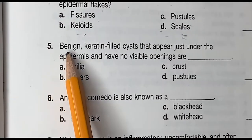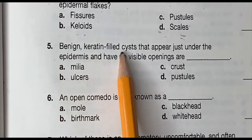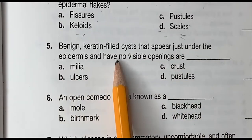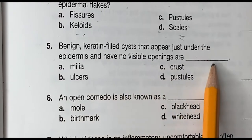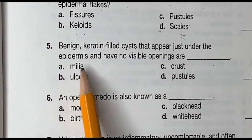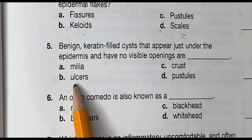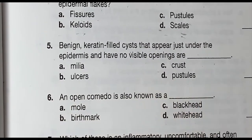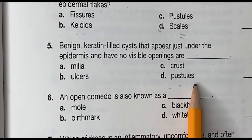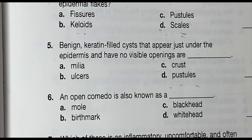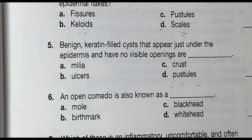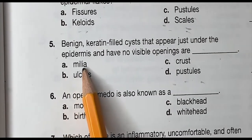Question 5: Benign keratin-filled crystals that appear just underneath the epidermis and have no visible opening are blank. Is it A, milia. B, ulcers. C, crust. Or D, pustules. And the correct answer is A, milia.